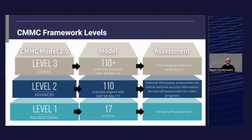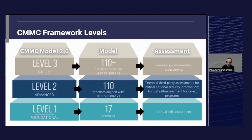At CMMC Level 2, there are 110 practices. It's intended for contractors who hold Controlled Unclassified Information, or CUI, and validates the implementation of the 110 requirements contained in NIST SP 800-171 Revision 2. CUI is defined as government-created or owned information that requires safeguarding, is not classified, and is provided to contractors by the DOD to perform the contract. Level 2 directly aligns with NIST 800-171 Revision 2. A self-assessment option was added, however, it will likely only be viable for a small percentage of contractors, so most contractors will have to be third-party certified at Level 2 or above.